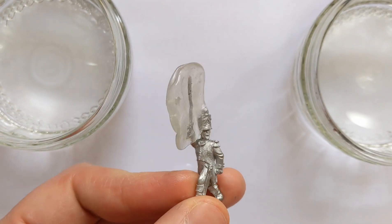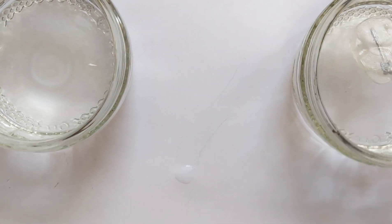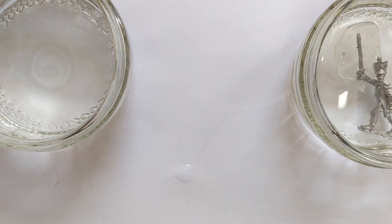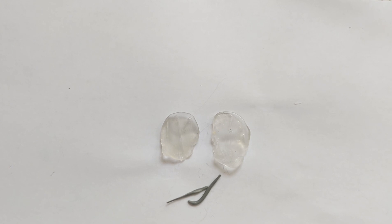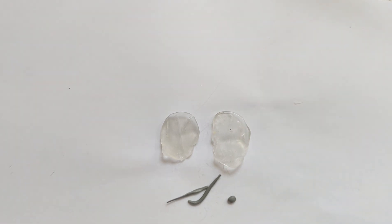We'll need a few minutes for this to harden up. I've mixed up some Procreate modelling putty. You can use green stuff or brown stuff, Milliput, whatever is your preferred putty.